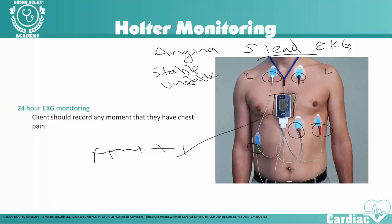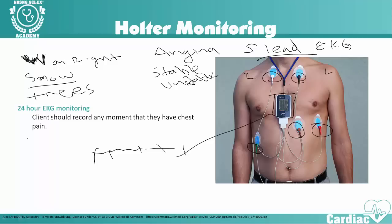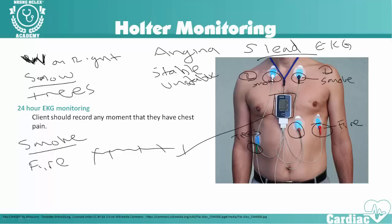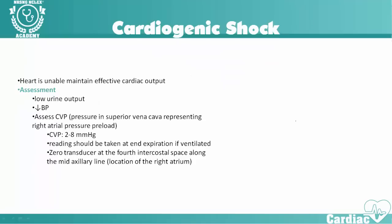The best way to remember five-lead EKG placement: white on right — so the white lead goes on the right. Then snow over trees, and smoke over fire. White is snow, green is the color of trees, black is the color of smoke, and smoke rises over fire. So white on right, snow over trees — white over green — and smoke over fire — black over red — and then our brown is our ground, going right in the middle. That's the best way to remember five-lead EKG placement.